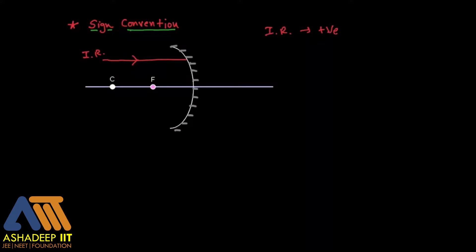In the Cartesian coordinate system, the direction we have chosen will be positive. The incident ray going in that direction will be positive, but the reflected ray coming back will be in the negative direction.